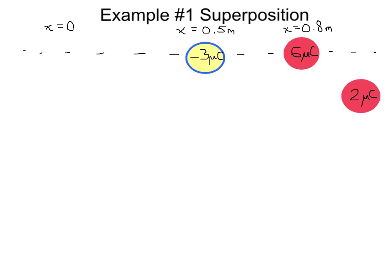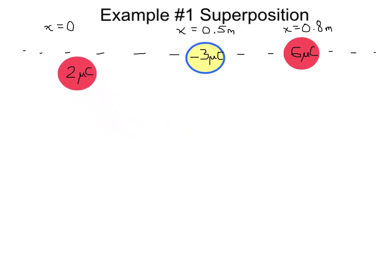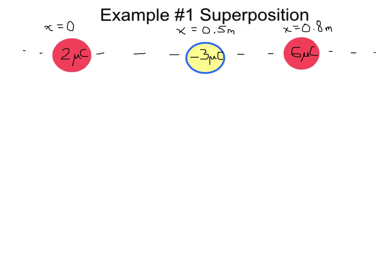Example number one of superposition. Let's take this positive two microcoulomb charge and place it at position zero. What's the net force on the two microcoulomb charge? If I place it here and let it go, will it accelerate to the right or to the left? To determine the net force, we need to isolate it in terms of the other two charges and apply Coulomb's law twice.